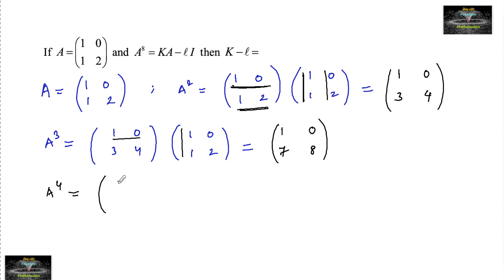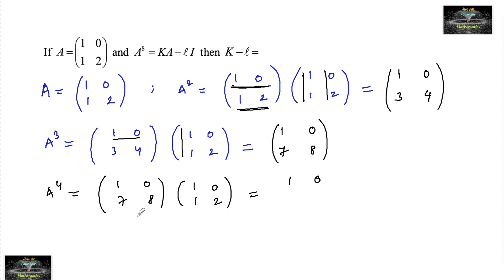For A to the power of 4, we compute [[1,0],[7,8]] multiplied with [[1,0],[1,2]], which gives [[1,0],[15,16]]. Now we can observe a pattern here.